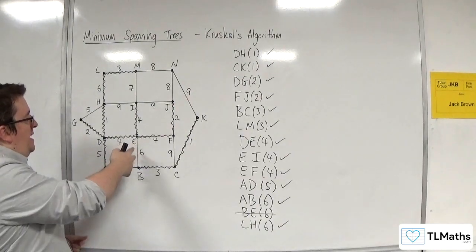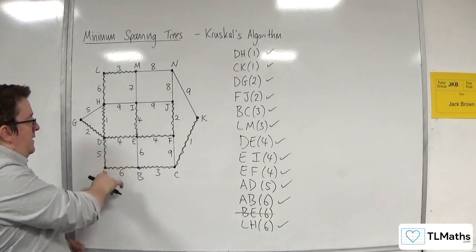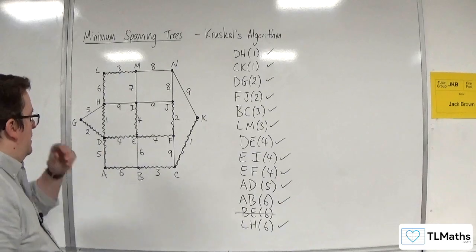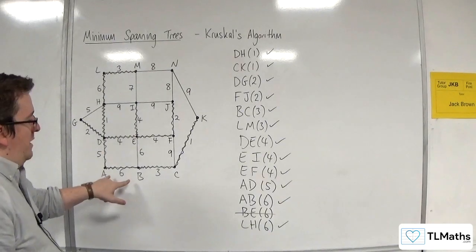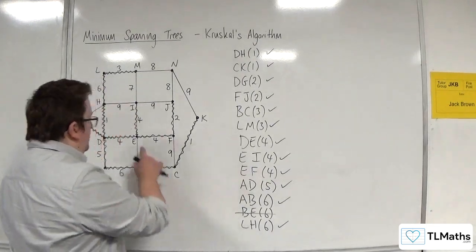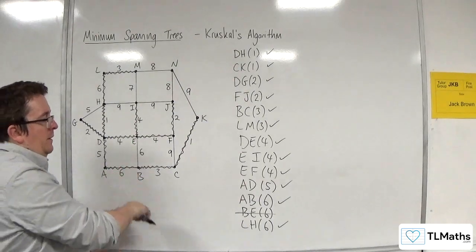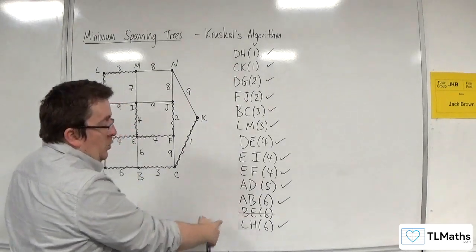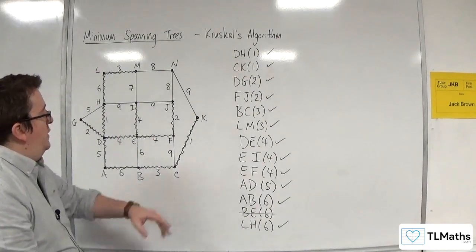We wouldn't have selected EB because we've connected these bits with AD. We could have done, couldn't we? If we hadn't have done AB. If we hadn't have chosen AB and we looked at BE first, we would have chosen BE instead of AB. So it depends on the order of choice.